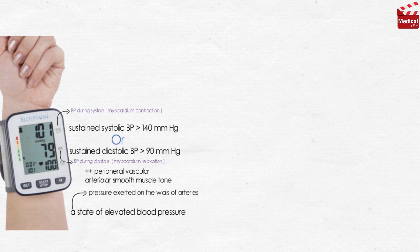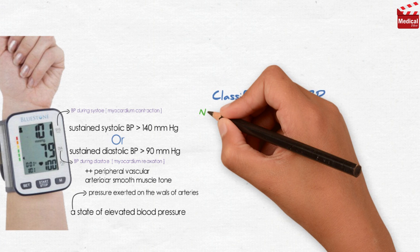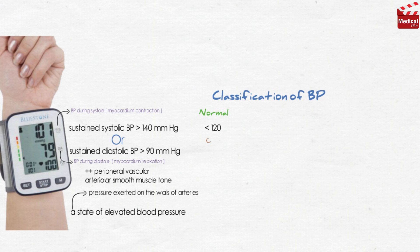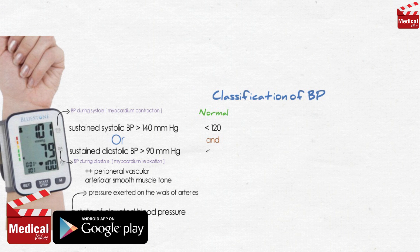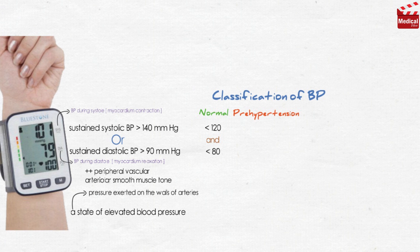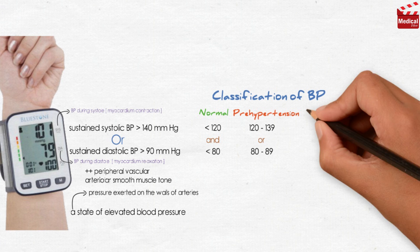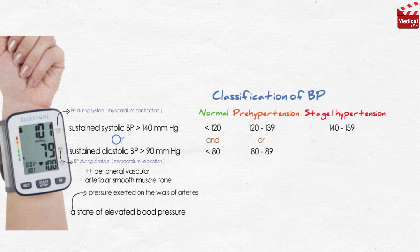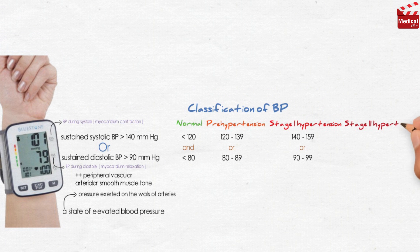That leads us to the classification of blood pressure. Normal blood pressure is less than 120 for the systolic and less than 80 for the diastolic. Pre-hypertension ranges from 120 to 139 for the systolic, or from 80 to 89 for the diastolic. Stage 1 hypertension is from 140 to 159 for the systolic, or from 90 to 99 for the diastolic. Stage 2 hypertension is equal to or greater than 160 for the systolic, or equal to or greater than 100 for the diastolic.